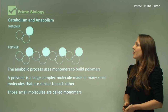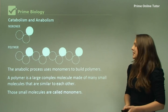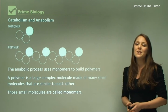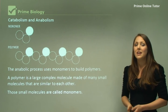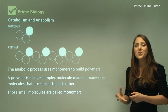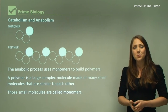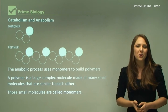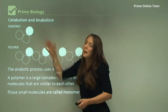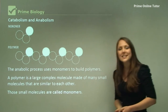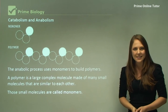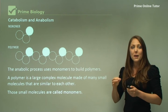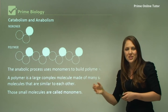So anabolism and catabolism. Here it says it's a monomer. A monomer is just a very simple substance, a very simple molecule. Each circle here may represent an amino acid — and amino acids, remember, build up proteins.